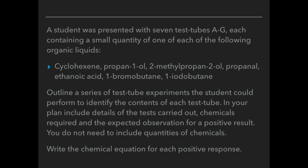Imagine a student was presented with seven test tubes labelled A to G. Each one contains a small amount of one of each of the following organic liquids — you can see the list of options. You have to outline a series of test tube experiments that the student could perform to identify which test tube was which. In your plan you must include details of the tests carried out, chemicals required, and the expected observation for a positive result. You don't need to include quantities of chemicals, just the chemicals themselves. Finally, you need to write chemical equations for each positive response.